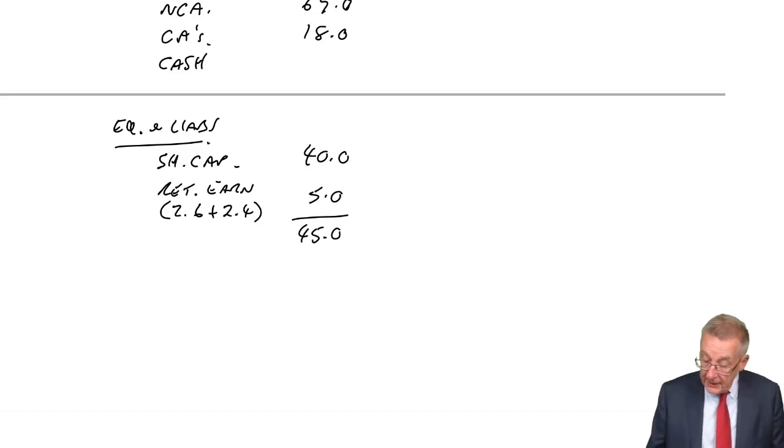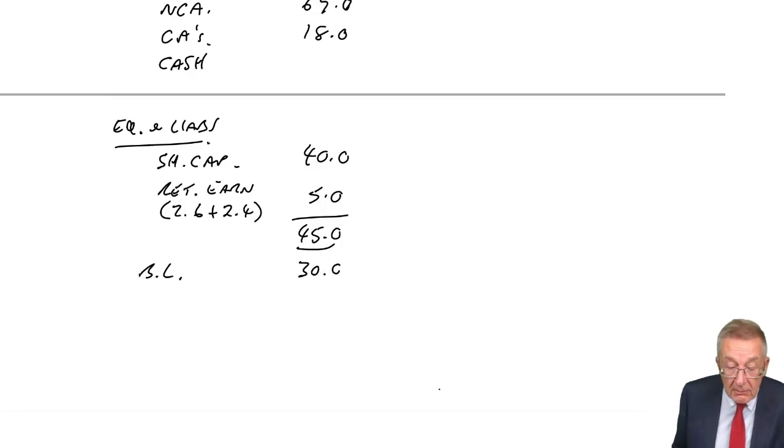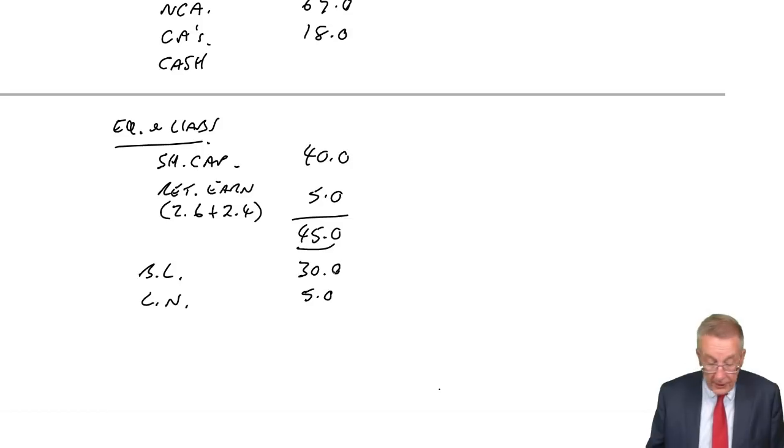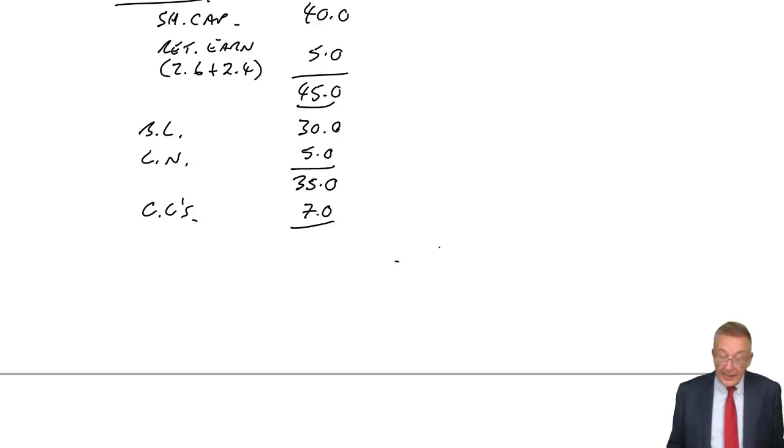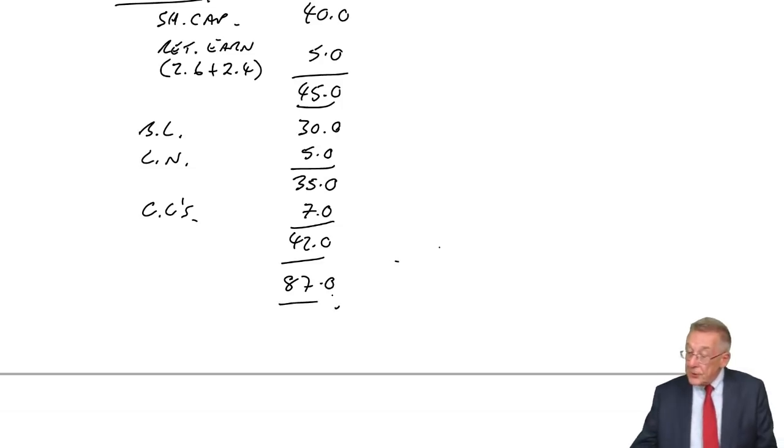What about long-term liabilities? The bank loan? No change. Still there. It's not repayable until 2019 or something. So 30. The loan note to Patel? No change at 5. The current liabilities? Well, again, note 4 at the top of the second page. They can be assumed to be the same. So they'll stay at 7. And so what does all that add up to? 45, 42, 87.